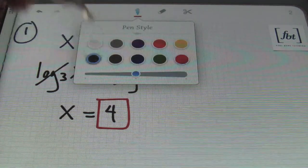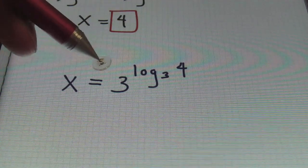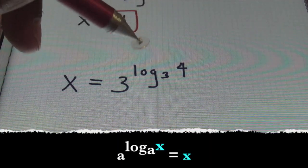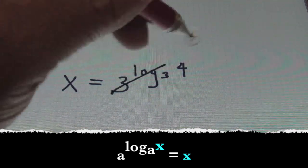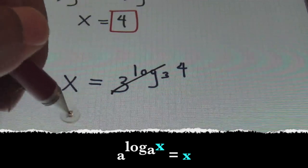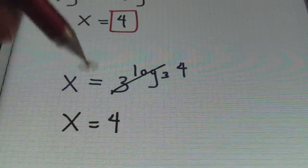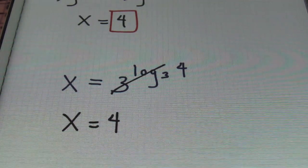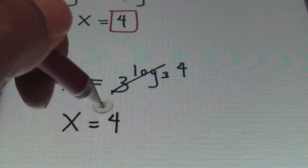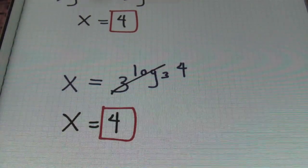Another way to approach this: anytime my larger base is equivalent to the base of my logarithm, those will cancel out to leave me that value as the answer, which means x is equivalent to 4. This 3 and the logarithm with the base of 3 cancel out to give me a result of 4. So either way you'll end up with x equals 4.